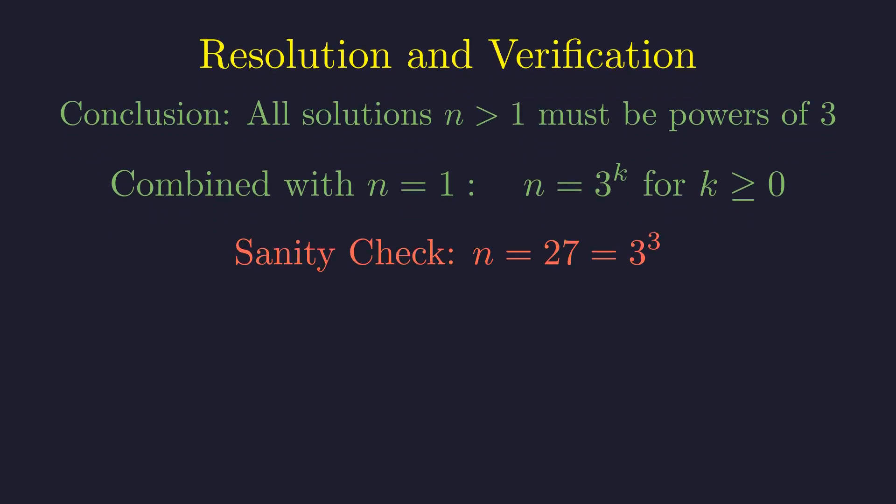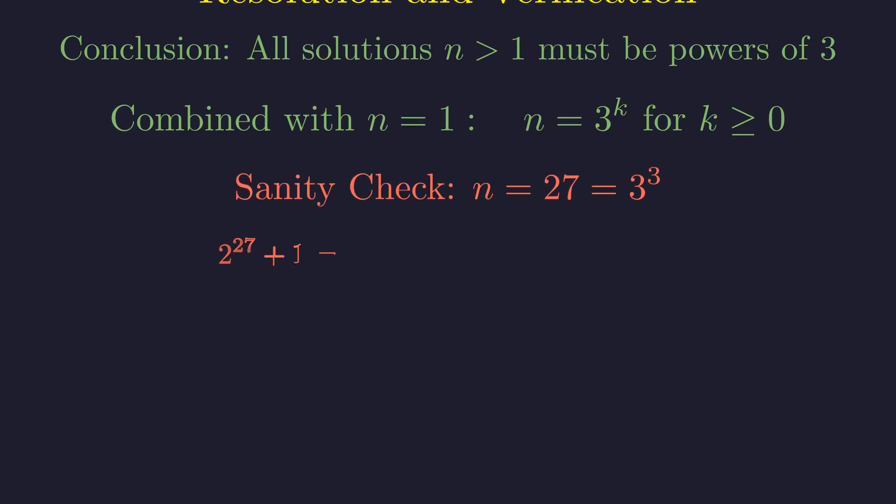Let's verify with a concrete example. Does 27 divide 2 to the 27th power plus 1? Indeed, 2 to the 27th plus 1 equals 134,217,729, which factors as 27 times 4,970,657.